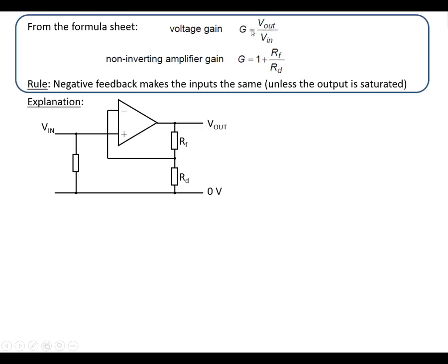We're also going to use gain equals V out over V in. With this circuit we've got a rule here that negative feedback makes the inputs the same unless the output is saturated, and that's true for all op-amp voltage amplifiers. The input resistor here will cover this with the impedance video.